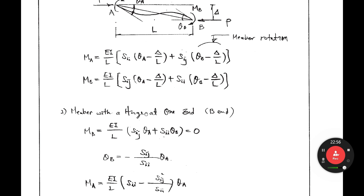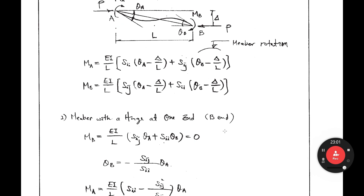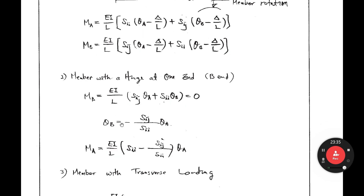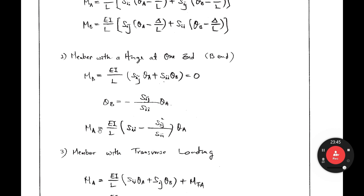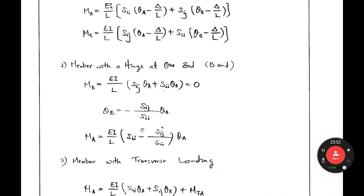Now let's consider a member with a hinge at end B. Hinge means moment equals zero, so MB equals 0. From the MB equation: EI/L times (SIJ·ζA plus SII·ζB) equals 0. From this you get the relationship ζB equals minus (SIJ / SII)·ζA. Substituting this into the MA equation, you can rewrite MA. If you have a hinge at B, the MA equation simplifies accordingly.